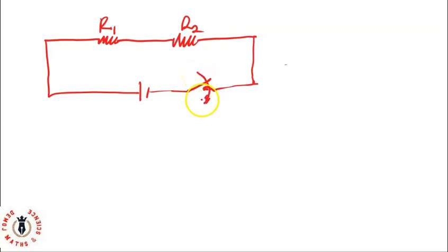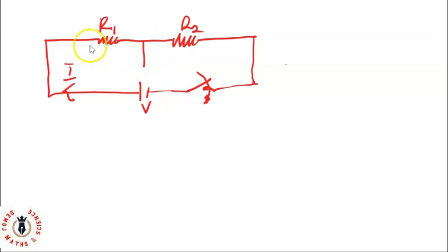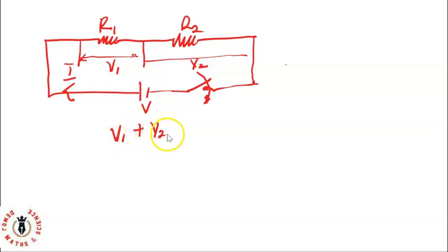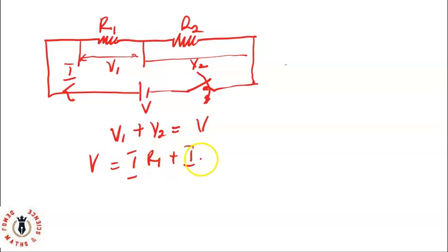If this switch is closed, current will flow through it — let's call the current I, and the voltage is V. Based on our resistors in series, the voltage across R1 is V1 and the voltage across R2 is V2. From our last lesson we agreed that V1 plus V2 equals V.